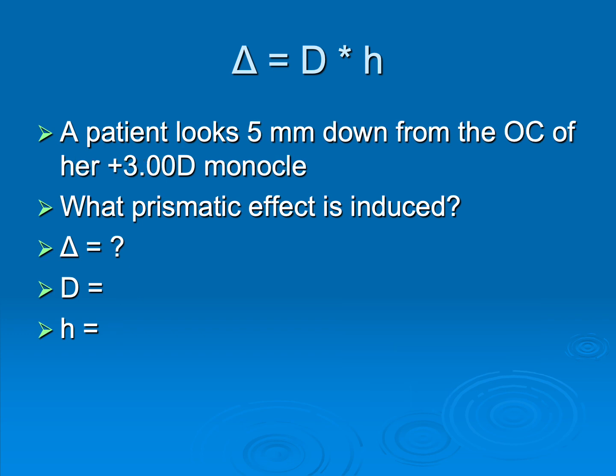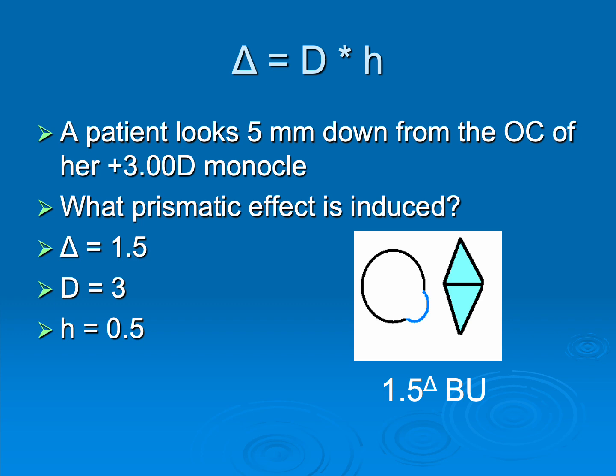Here I have a patient looking five millimeters down from the optical center of her plus three monocle. This is something that you may see on an exam. They're not going to give it to you necessarily in centimeters. They're going to ask if you understand the metric system, which you do. Just pay attention so that you don't immediately put that as five and not as 0.5. So D is three, H is 0.5. And that gives us 1.5 prism diopters. But what orientation? Here they are looking down from the optical center in a plus lens. Plus lenses are two prisms stacked base to base. And so it is a base up 1.5.